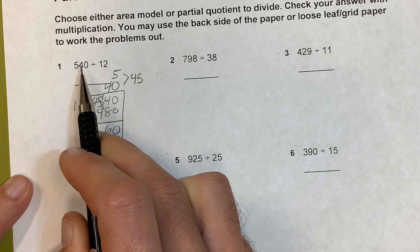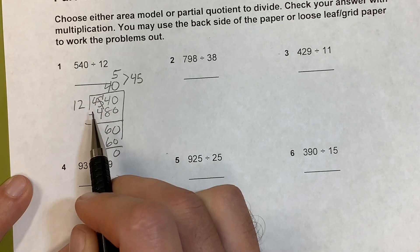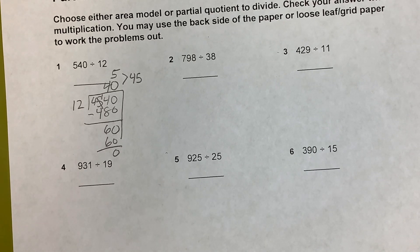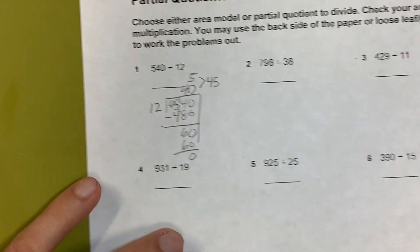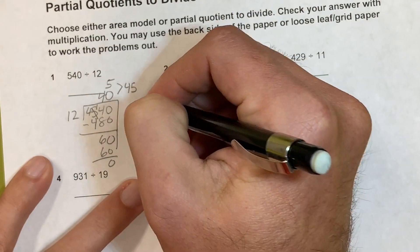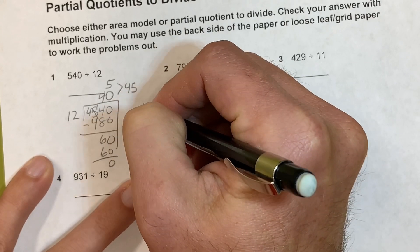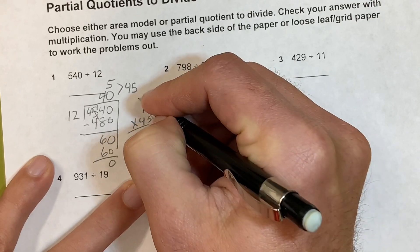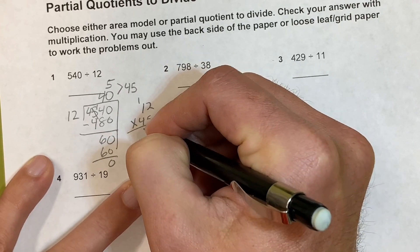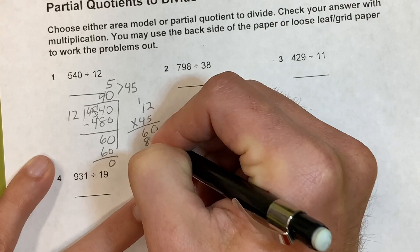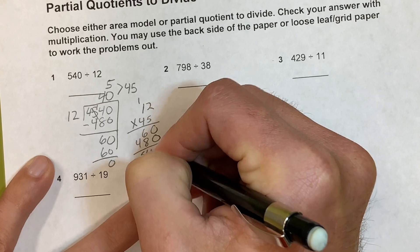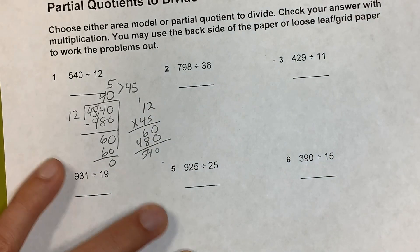So 45 times 12 equals 540, and 12 times 45 equals 540. To check that by multiplication, we'll do standard algorithm. 5 times 2 is 10, 5 times 1 is 5 plus 1 is 6. Then 4 times 2, 4 times 1. Add together to get 540.